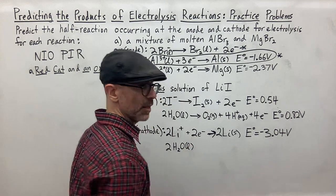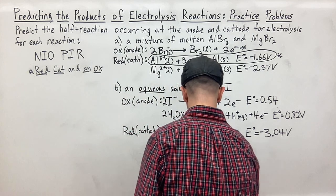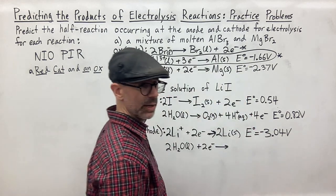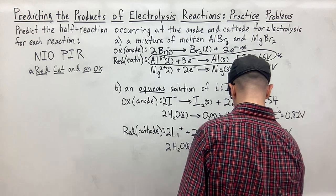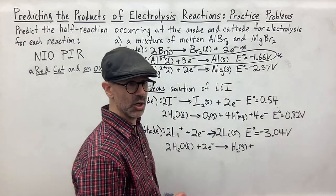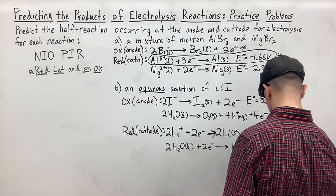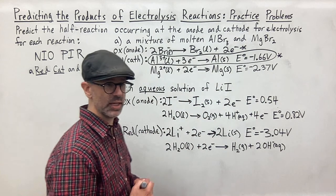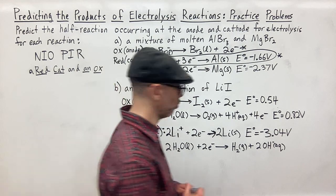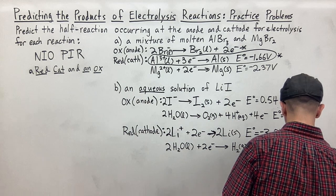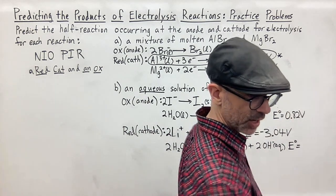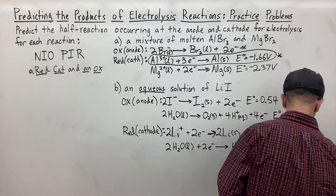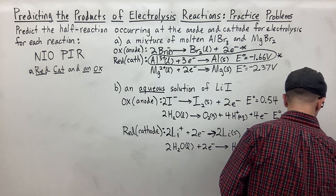We also have to consider water as a competitor for reduction. The reduction of water is: 2H₂O(l) + 2e⁻ → H₂(g) + 2OH⁻(aq), and the electrode potential for the reduction of water is −0.41 V.